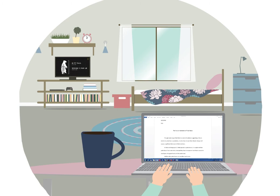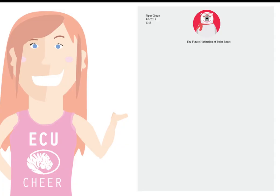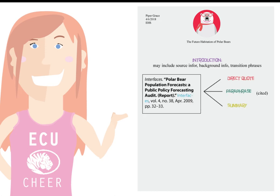Whether you present ideas from an outside source, there are three main components that you need to include. First, provide an introduction — a way for you to set up the information that you'll be presenting from the outside source. Next, include the idea from the source as either a direct quote, paraphrase, or summary. Make sure to always properly cite ideas from outside sources. Finally, include an analysis of the ideas that you've presented. An analysis will include your response, interpretations, or arguments in relation to the idea from the outside source.